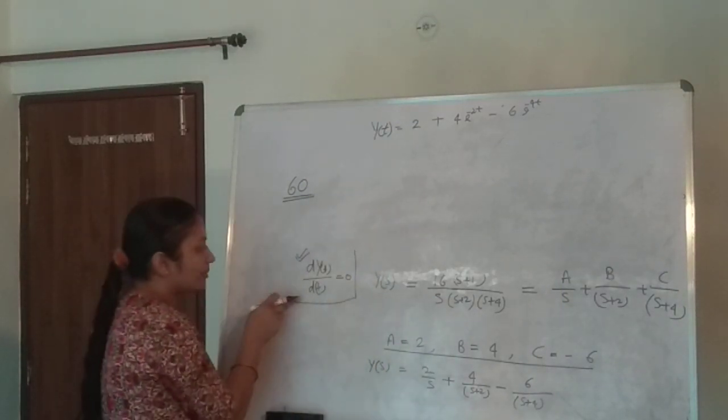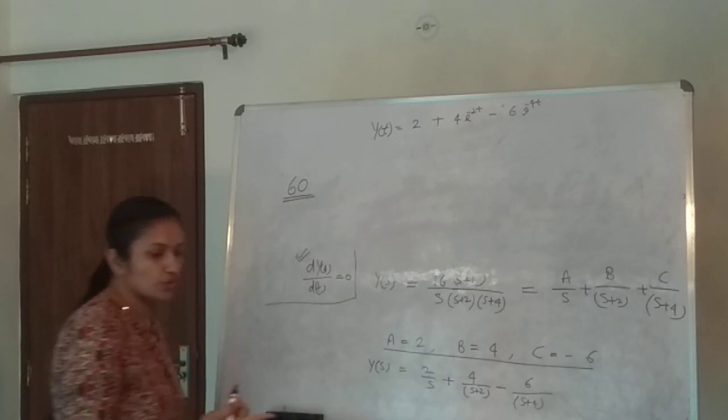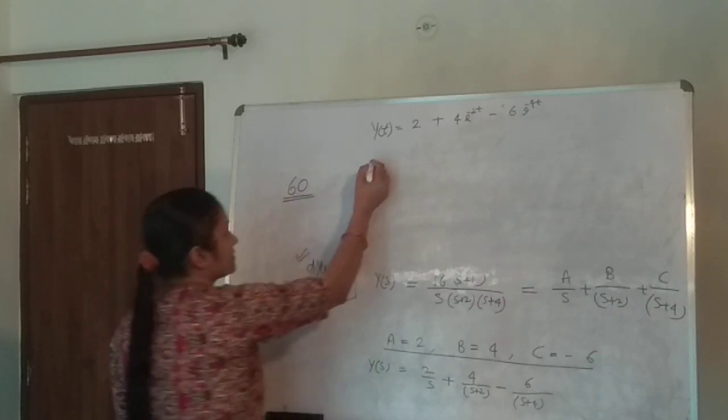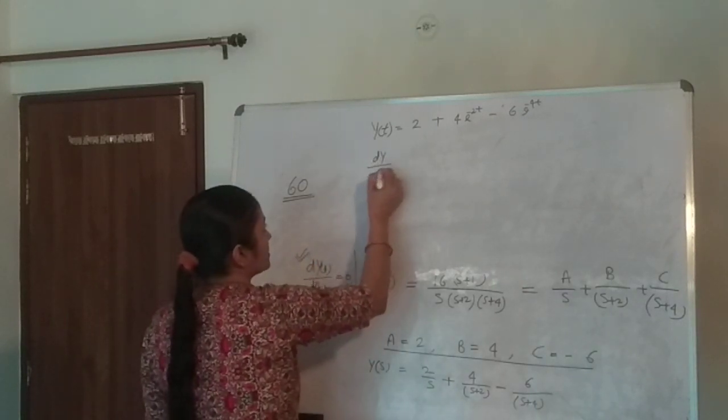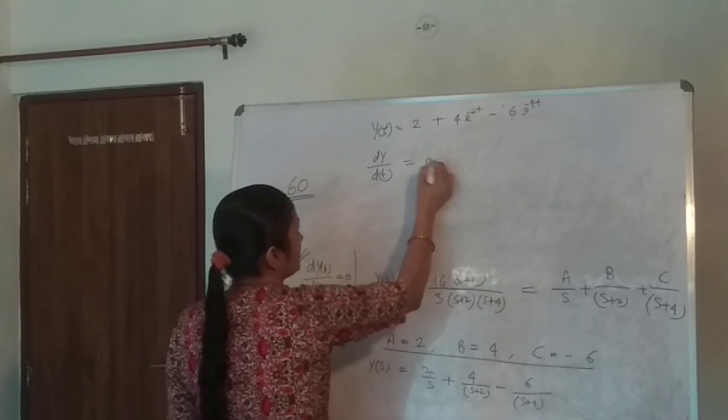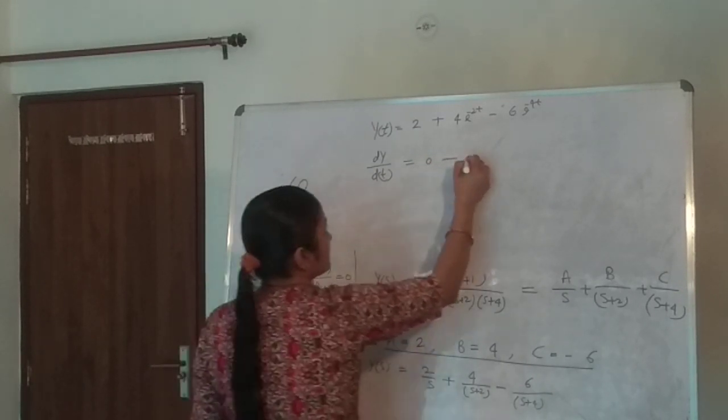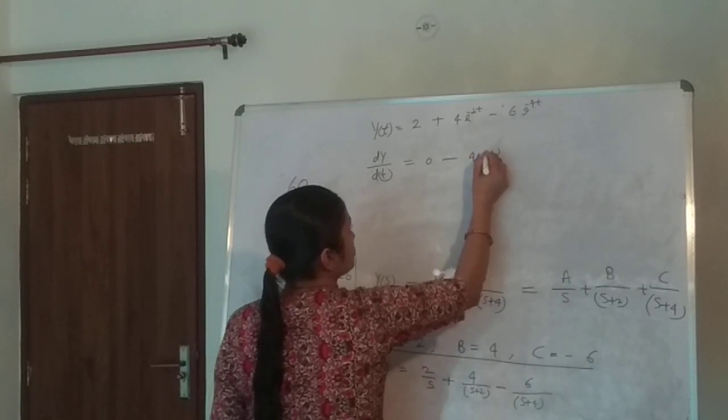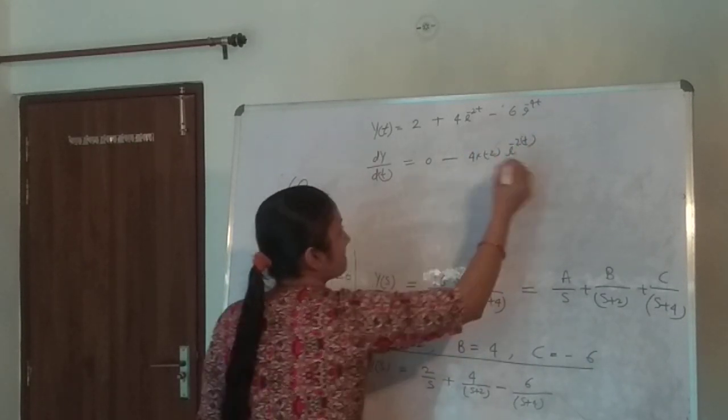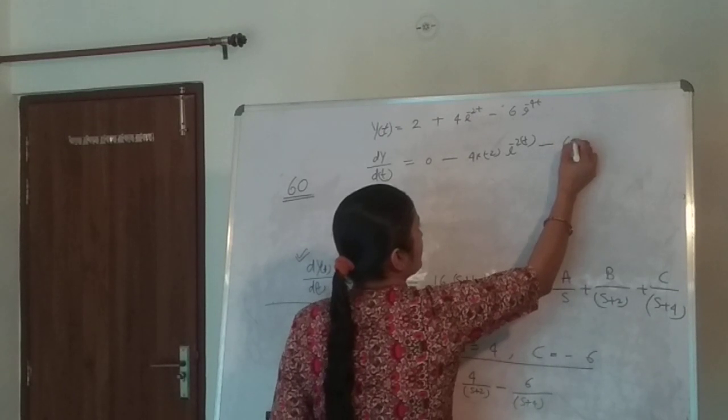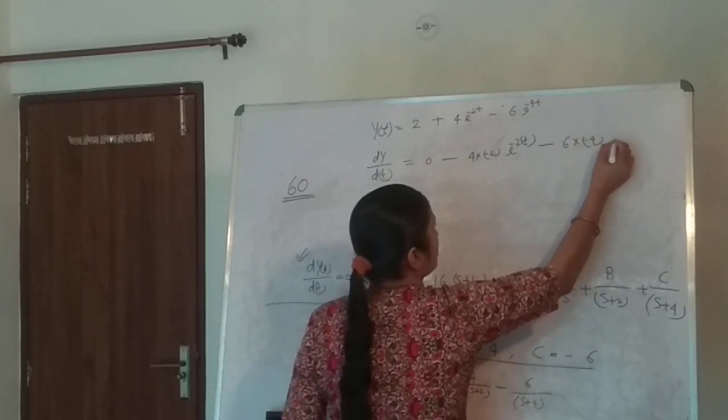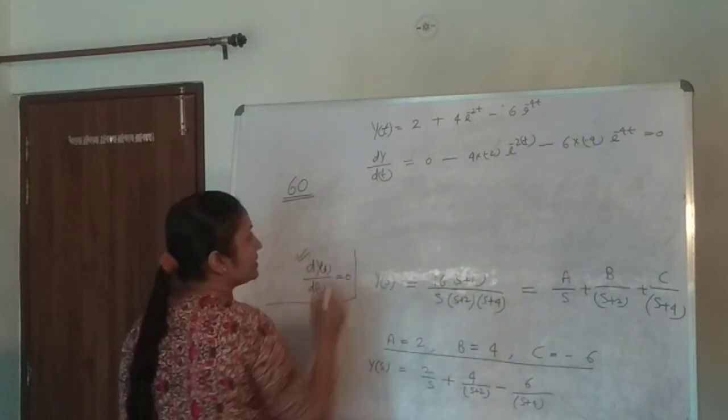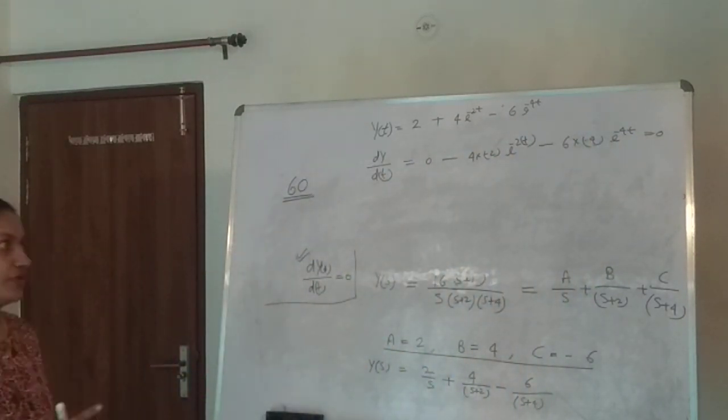Now substitute for the maximum response, the time at which you will get maximum response. Differentiate this, make the first derivative of this equation. dy/dt equals 0, that is nothing but minus 8e^(-2t) plus 24e^(-4t) equals 0.